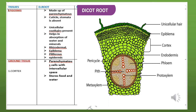The names are: rhizodermal, epiblema, piliferous, and epidermis. This layer is made up of parenchyma cells. Cuticle and stomata are absent in the dicot root — cuticle is a thin layer normally found lining the epidermis, but here it is absent, and stomata are completely absent as well.